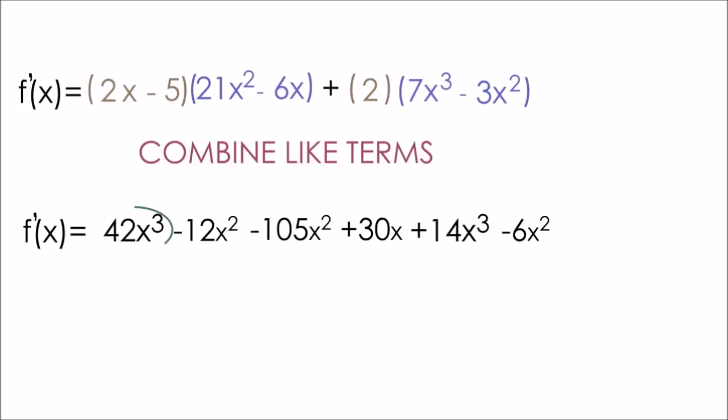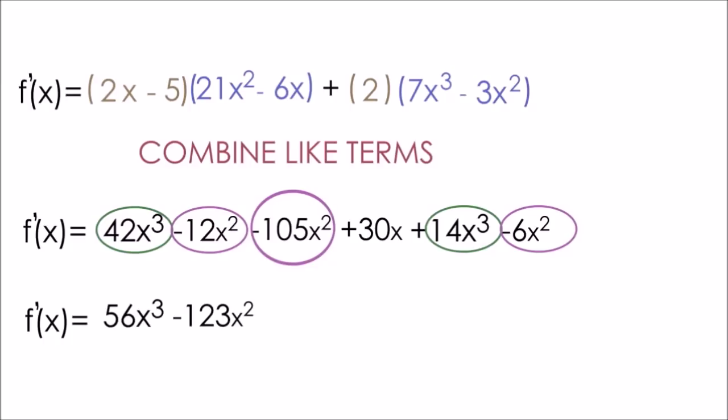First, let's combine our x cubed terms. We have 42x cubed and 14x cubed. 42 plus 14 is equal to 56x cubed. And we can also combine our x squared terms. We have negative 12x squared, negative 105x squared, and we have negative 6x squared. Negative 12 minus 105 minus 6 is equal to negative 123x squared. And last but not least, we can't forget about our 30x, which just stays the same.